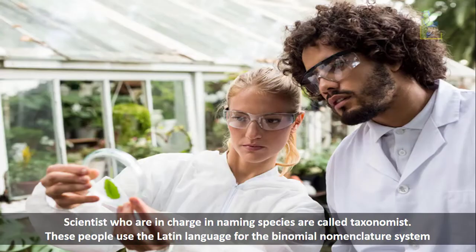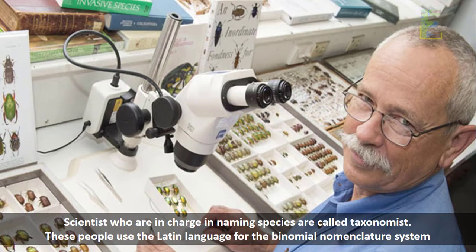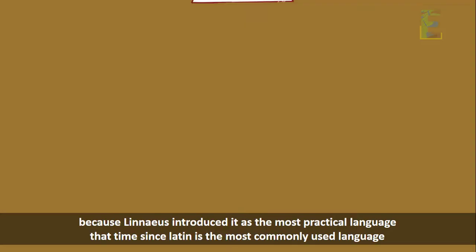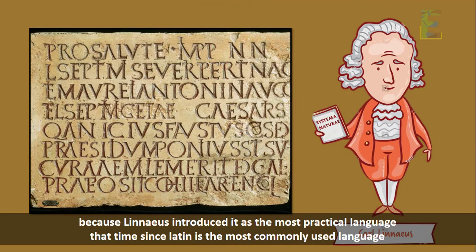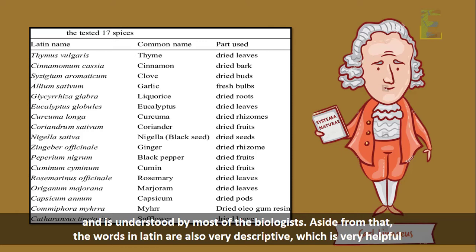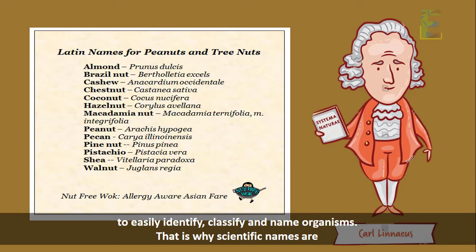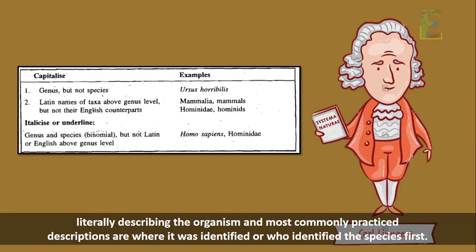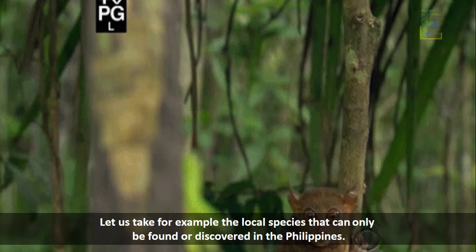Scientists who are in charge of naming species are called taxonomists. These people use the Latin language for the binomial nomenclature system because Linnaeus introduced it as the most practical language at the time, since Latin was the most commonly used language and understood by most biologists. Aside from that, words in Latin are also very descriptive, which is very helpful to easily identify, classify, and name organisms. That is why scientific names are literally describing the organism, and the most commonly practiced descriptions include where it was identified or who identified the species first.